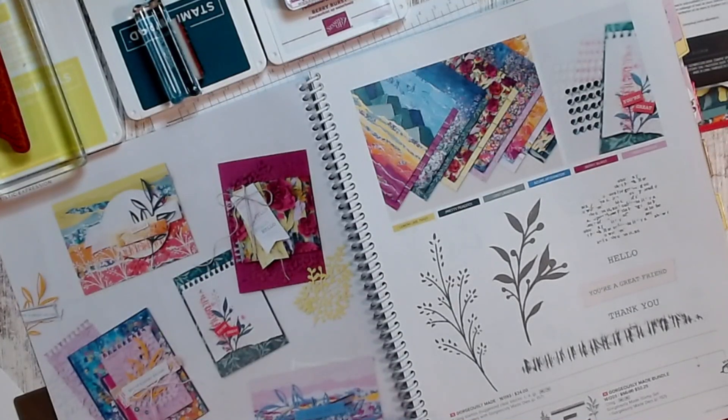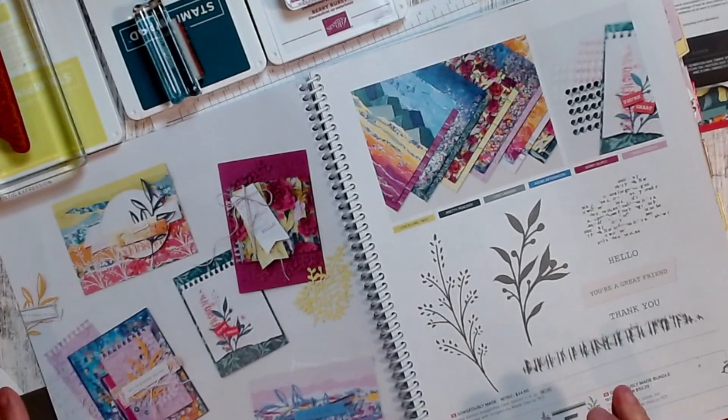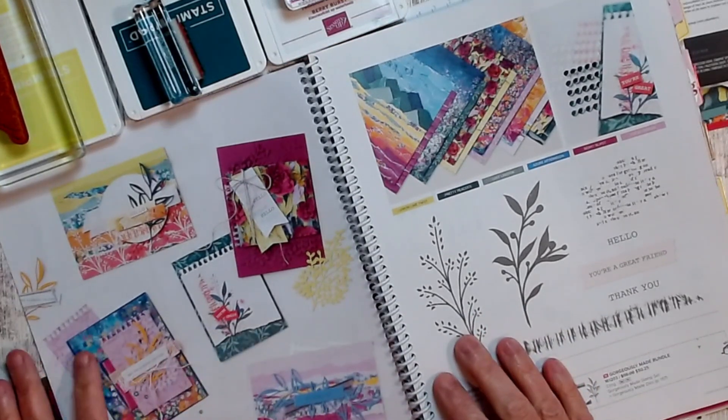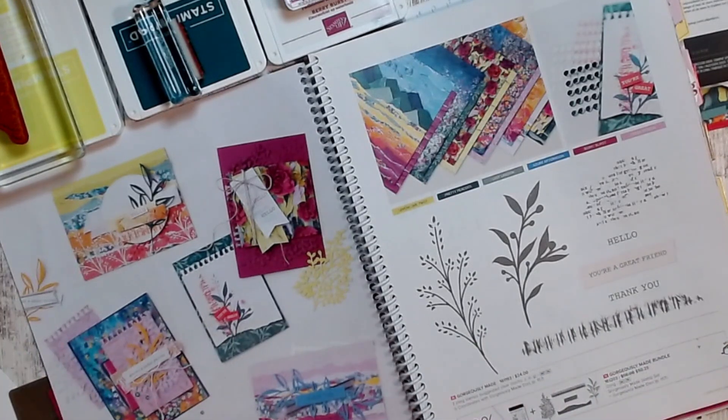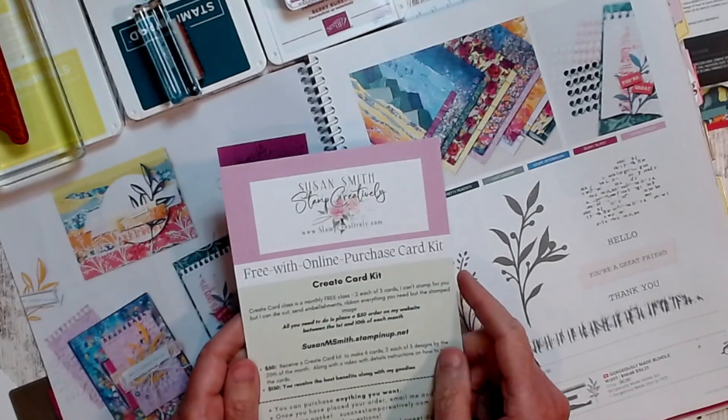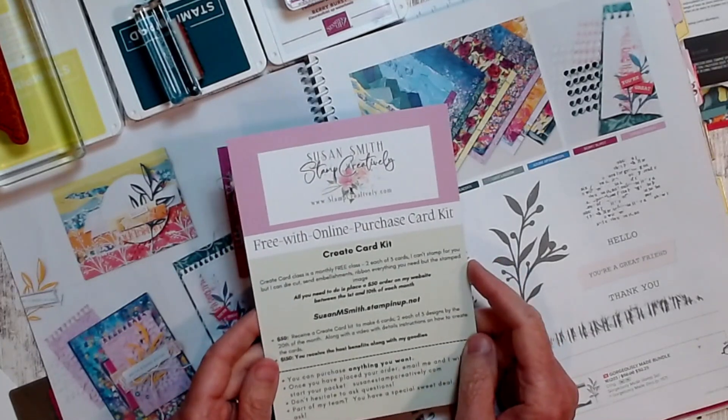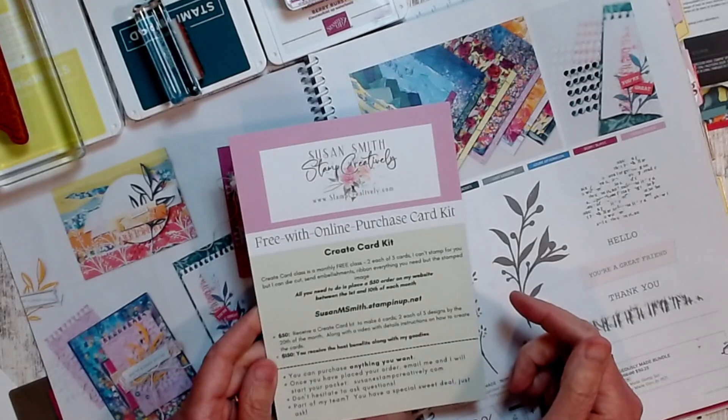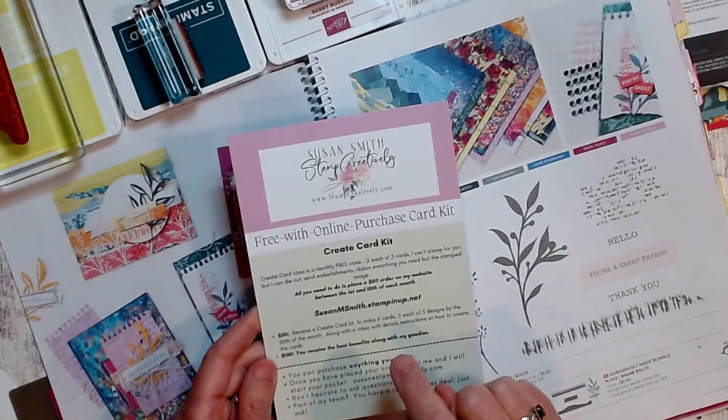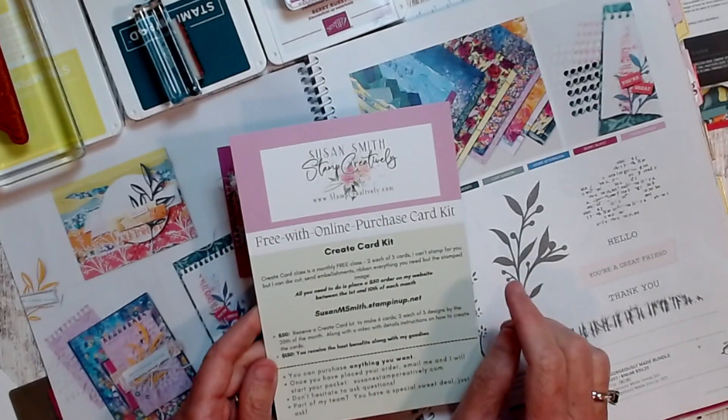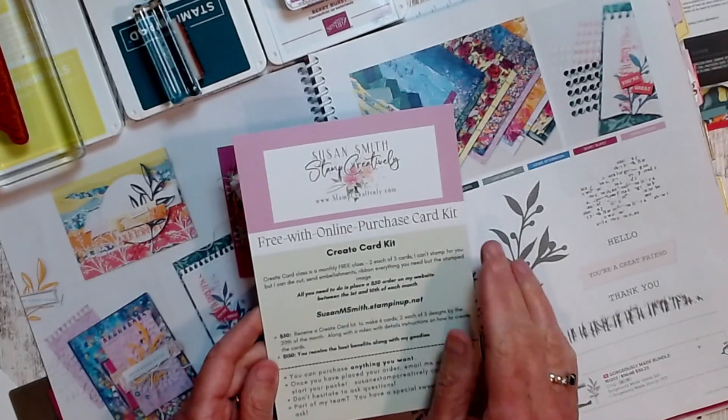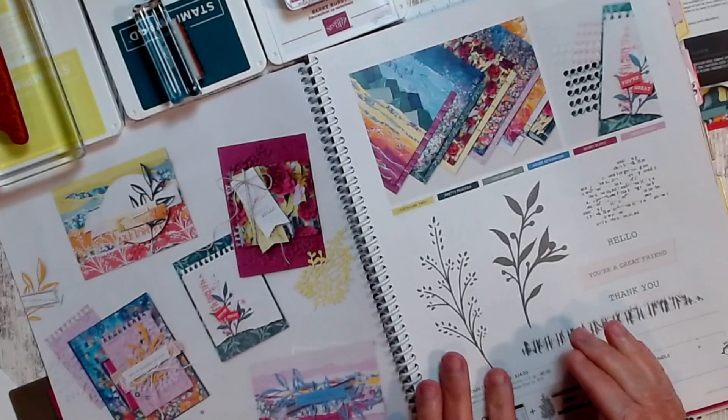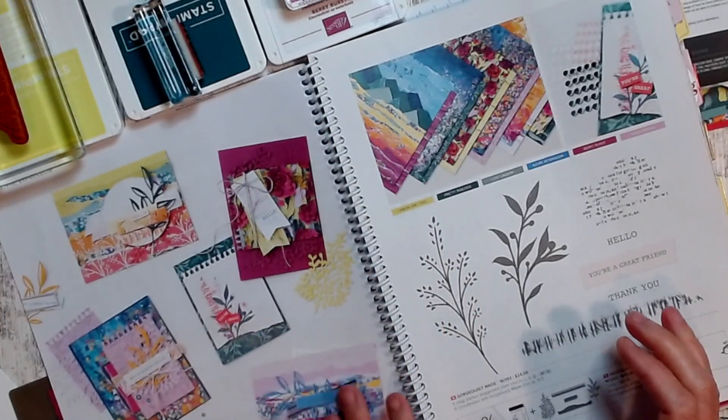Hi friends, it's Susan Smith with Stamped Creatively and I am going to show you some things with the Masterfully Made Suite. I am going to do a free with online purchase card kit. If you want details it's on my website stampcreatively.com and this will tell you everything that I'm going to do, but if you place an order with me, an online order between the first and the tenth of the month, you'll get two each of three projects. And so the first group of projects that I'm going to show you how to make in a video go with this Masterfully Made.